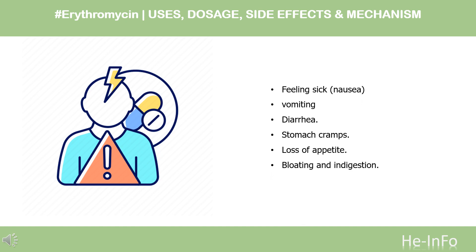Side Effects: Feeling sick — nausea. Stick to simple meals and do not eat rich or spicy food while taking this medicine. Being sick — vomiting. Take small, frequent sips of fluids such as water or squash to avoid dehydration. Other side effects include diarrhea, stomach cramps, loss of appetite, bloating, and indigestion.